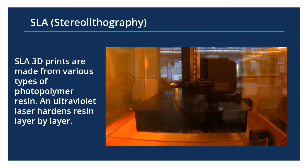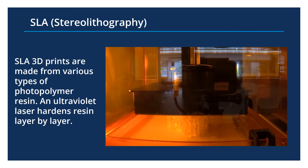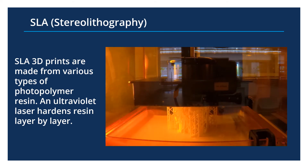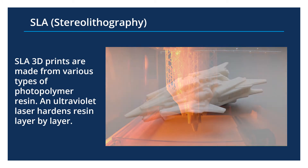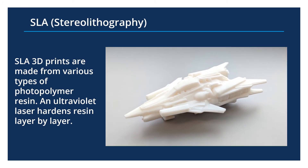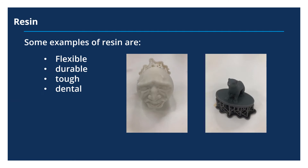The Maker Studio has two different kinds of 3D printers. One of them is Stereolithography, or SLA. SLA printers use liquid resin as well as UV lasers to harden and cure the resin layer by layer. There are many different kinds of resin: basic resin which comes in white, black, clear or grey, as well as flexible, durable, tough, and dental resin. One really neat thing about resin is that it has very high resolution, which means you can print very small prints and they will have very good detail.